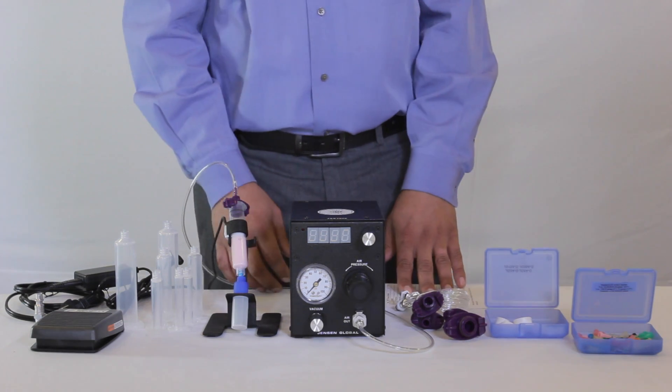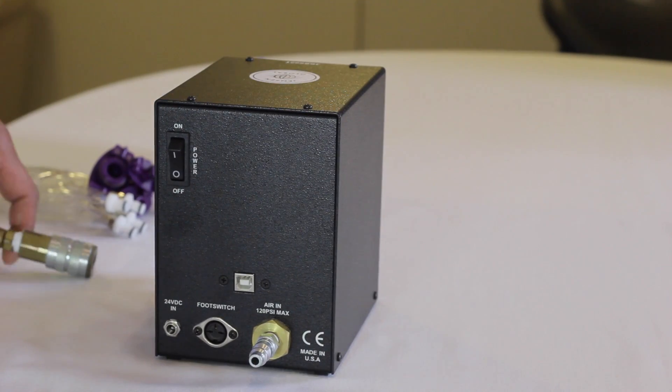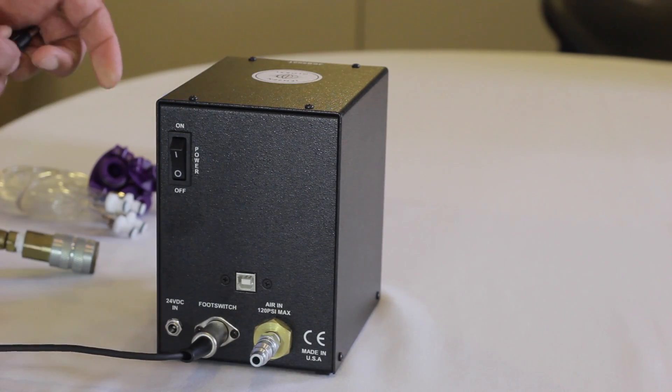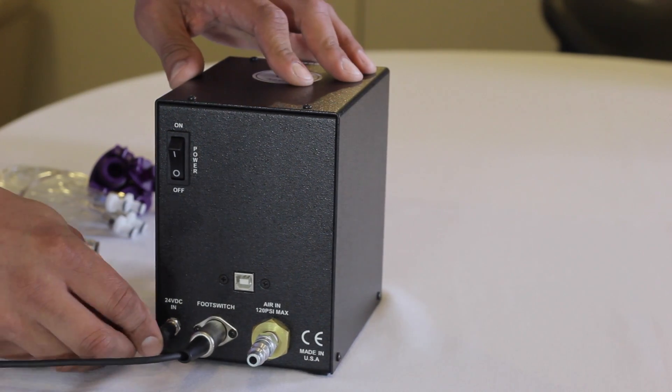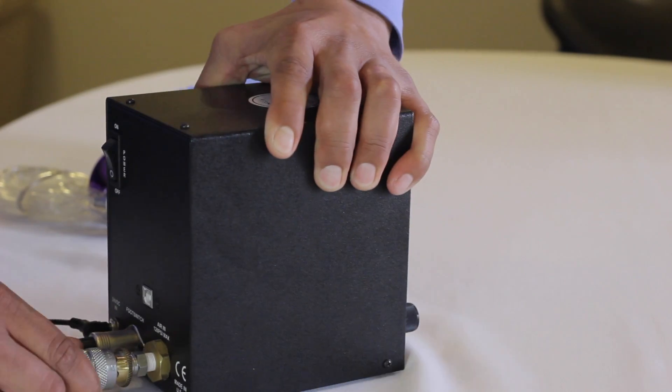Now that we have examined the contents, let's go over the general setup and operation of the unit. Plug the foot pedal or finger switch with 6-foot cord into the back of the unit. Connect your electrical power cord and then connect the dry air source to the Hansen fitting.